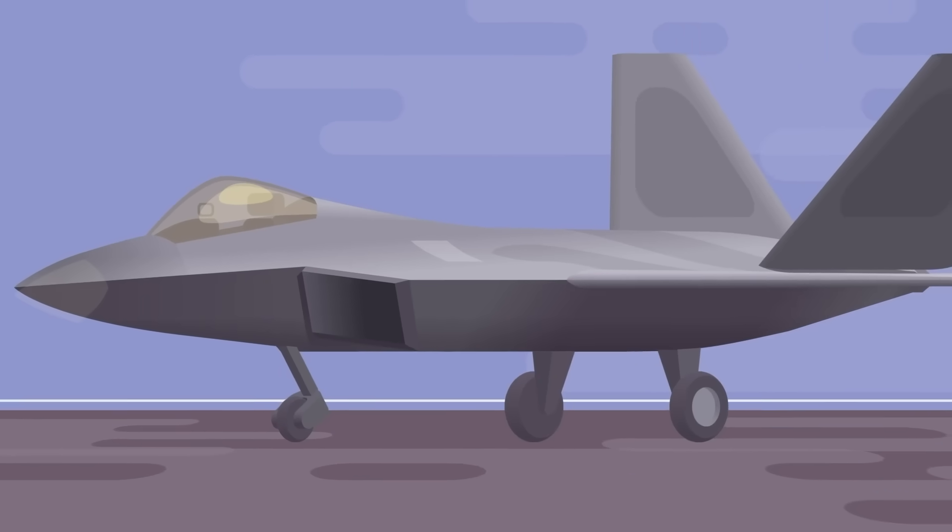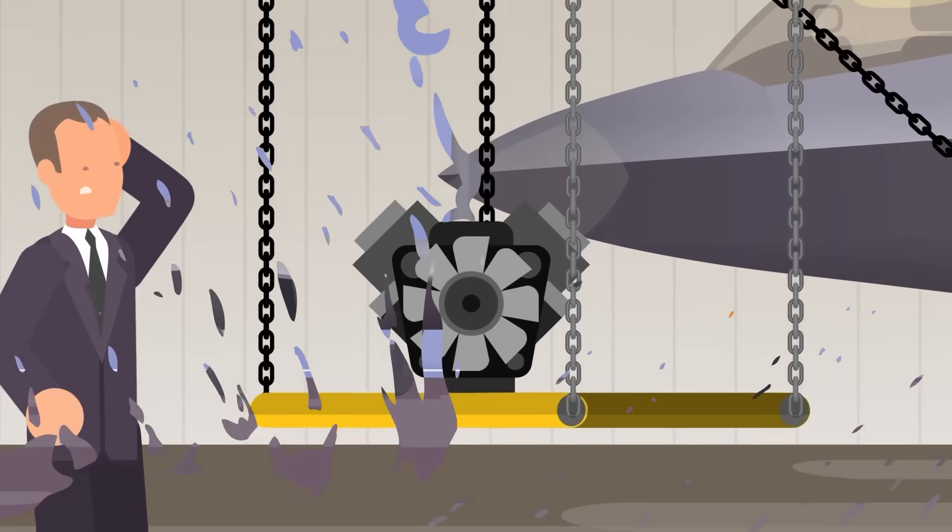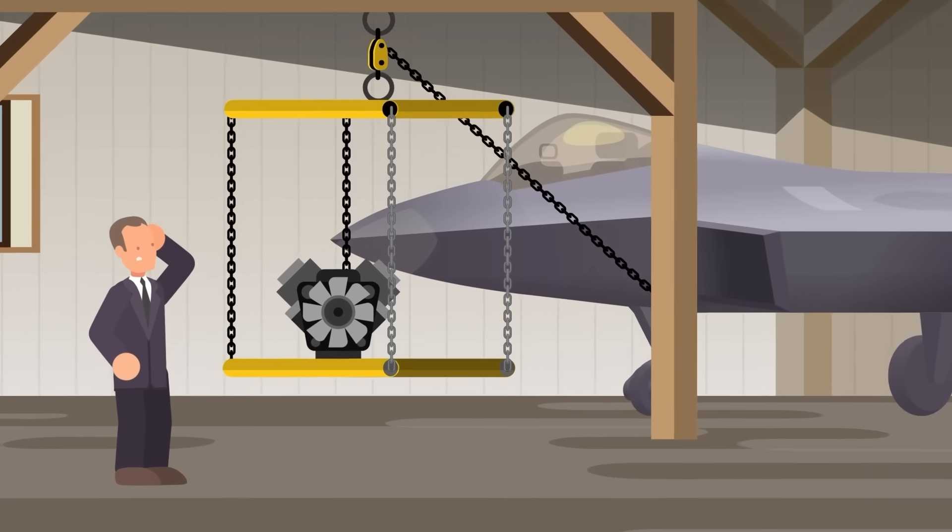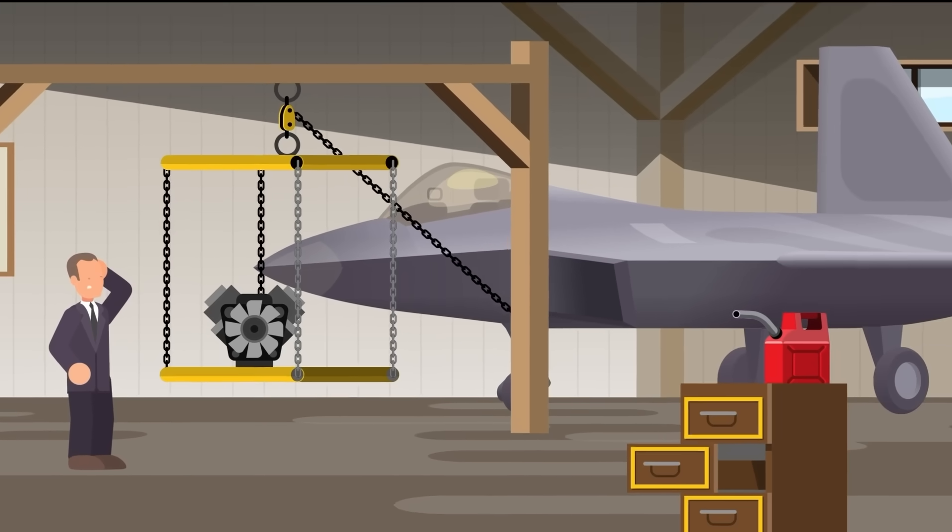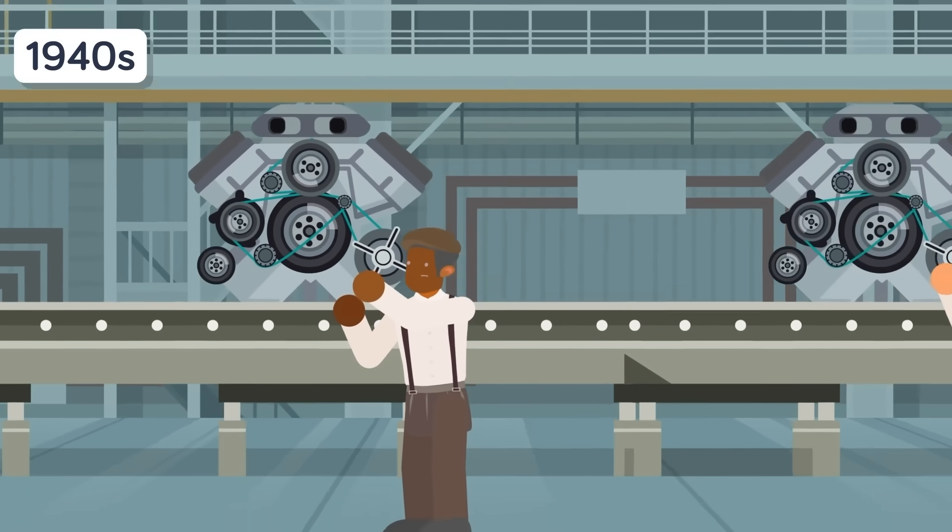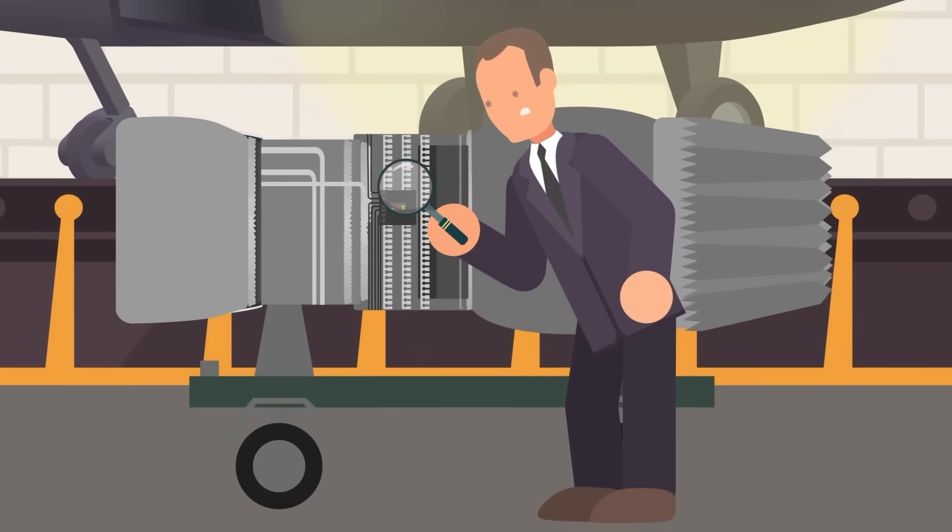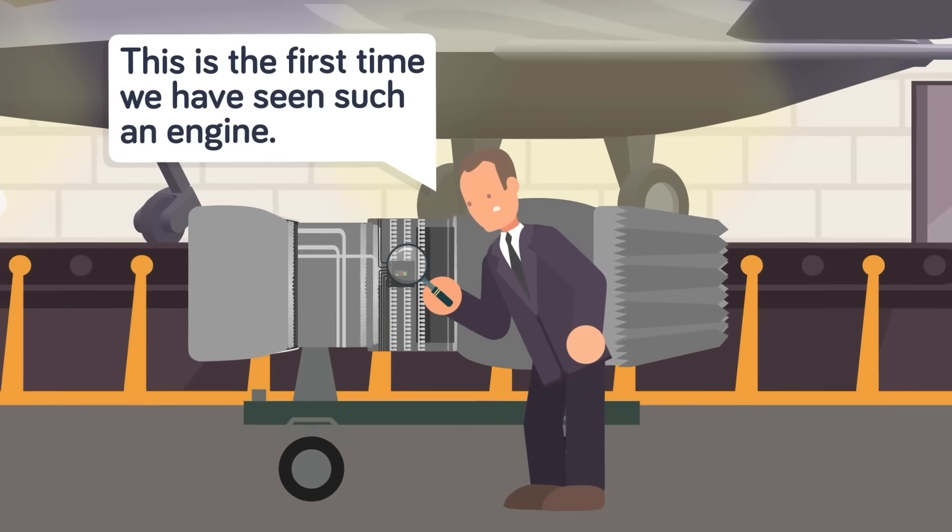The F-22 would be as immediately confounding to even the brightest minds of the time. Back then, the internal combustion engine had only been small enough to mount on an airplane for about a decade, and still decades behind the pinnacle of the design for piston engine aircraft that would come in the 1940s. The first thing to confound World War I engineers trying to do maintenance on the Raptor would be the engine.